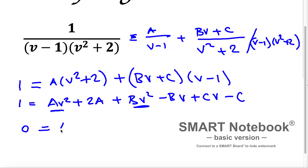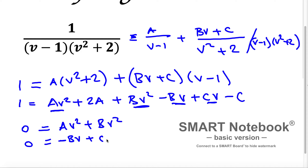So 0 equals A plus B times v squared. Now looking at the v terms: I have negative Bv and plus Cv, but on the left side there is no v term, so it equals 0. That gives minus Bv plus Cv equals 0. And for the constant terms: on the left side I have 1, and on the right side I have 2A minus C.